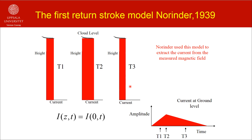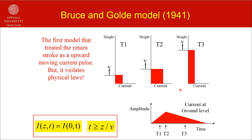Note that according to this model, if the point of observation is very close to the lightning channel, the magnetic field at that point follows the wave shape of the channel base current. There are two flaws with Norinder's model. First, it does not take into account the growth of the return stroke channel from ground to cloud. Second, it assumes that at a given time the current at any point on the channel is identical, which actually violates the fact that the speed of propagation of information in space is finite and equal to the speed of light.